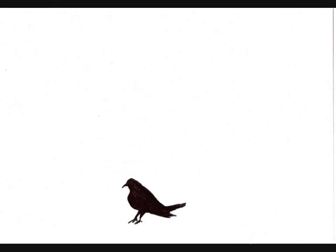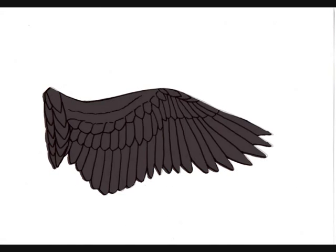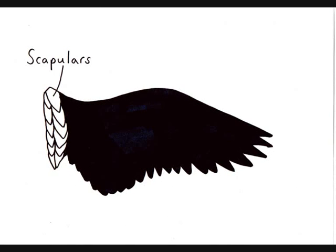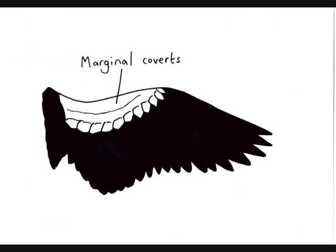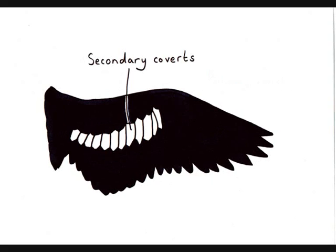Feathers vary in their structure and function. The wing feathers are made up of the scapulas, which cover the shoulder of the bird, the marginal coverts, primary coverts, and secondary coverts, which overlap each other and help to smooth air flow over the wings and tail.